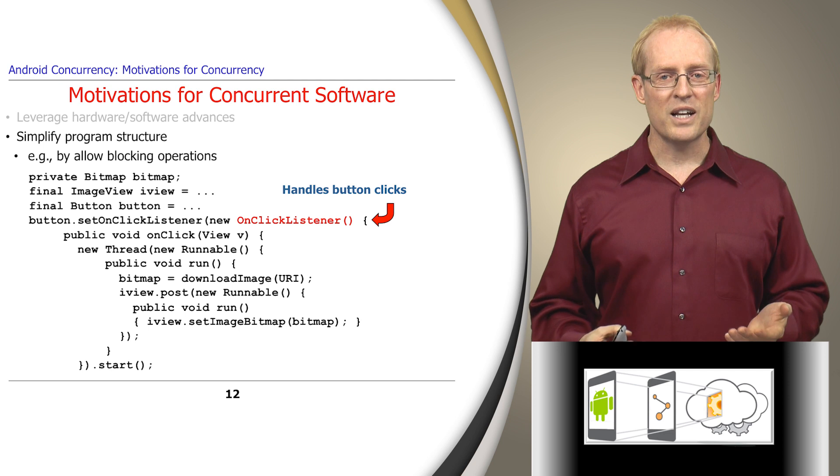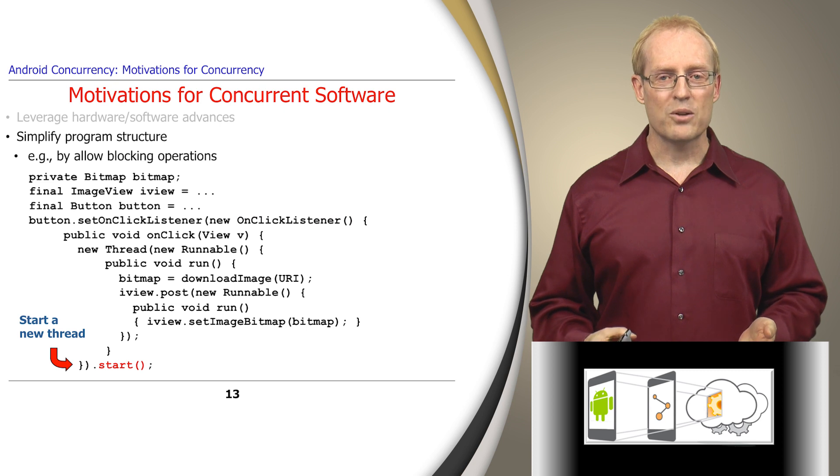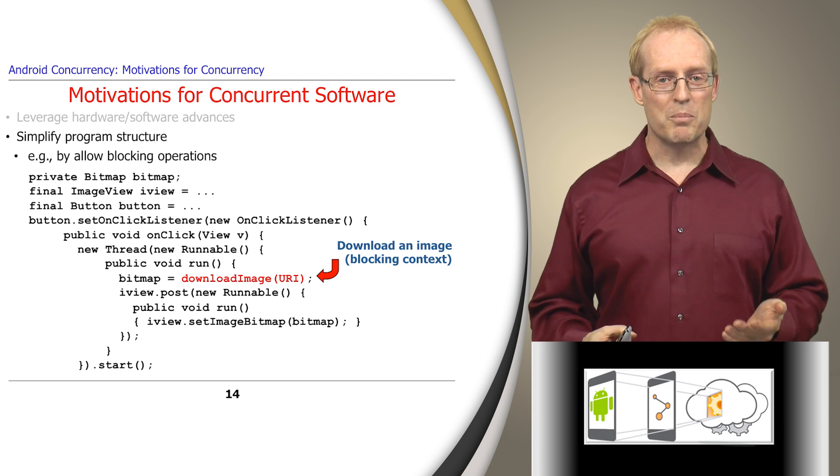This example has a click listener that handles buttons pressed on the Android touch screen. When a user presses the download button, this code starts a worker thread that runs in the background and blocks while downloading a bit mapped image.